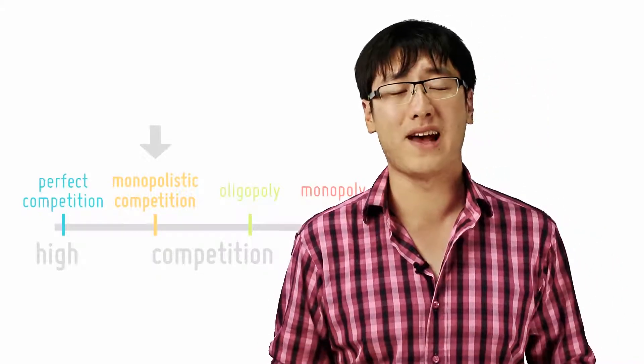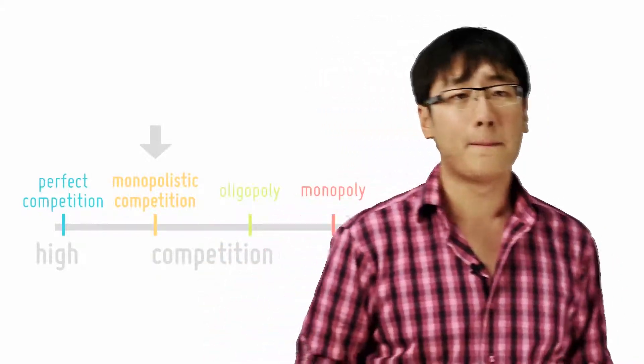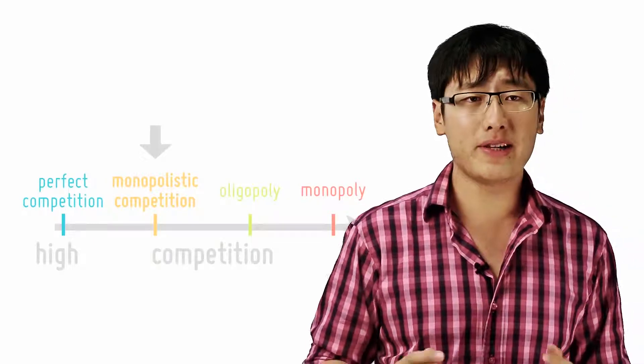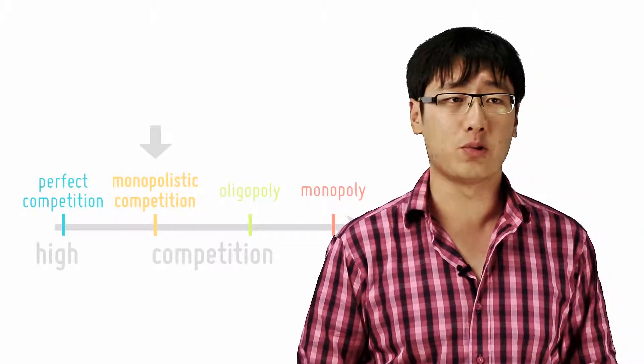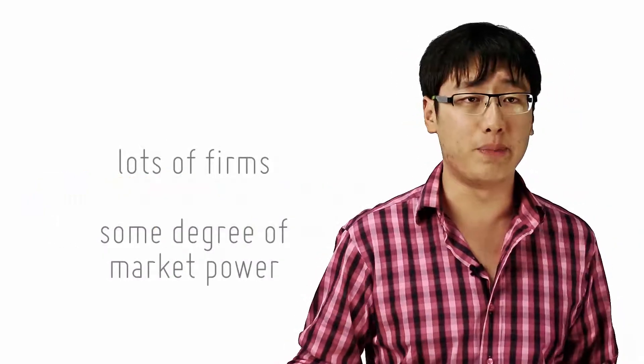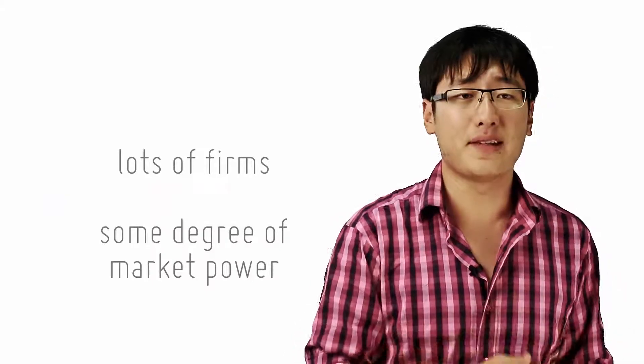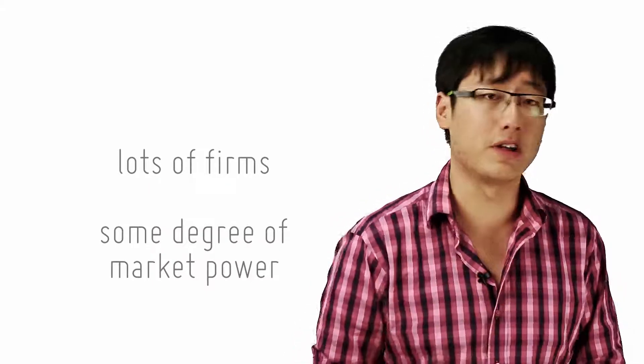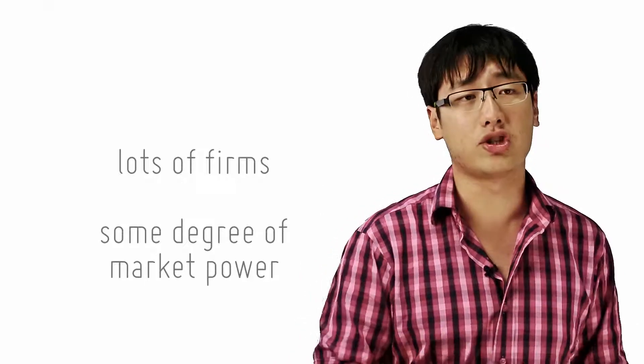Now let's look at something in the middle, more towards the side of perfect competition. Monopolistic competition is best understood as a situation where there are lots of firms competing, but each firm nonetheless has some degree of market power, a very small degree, hence the term monopolistic competition.